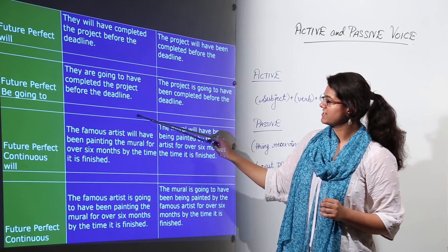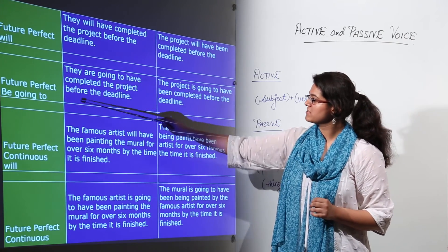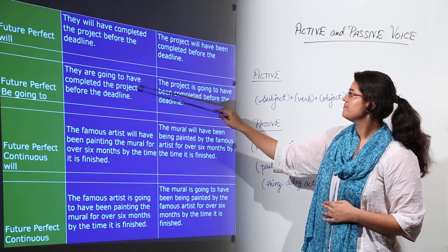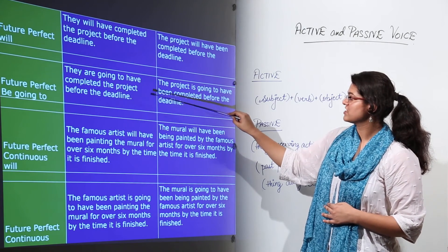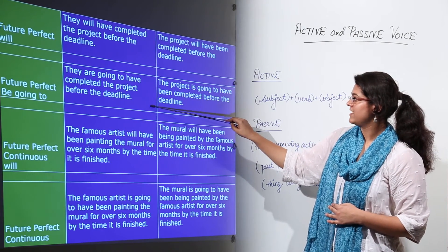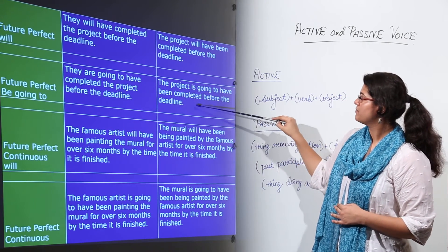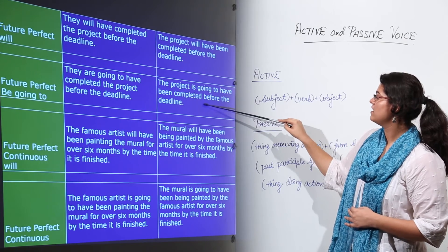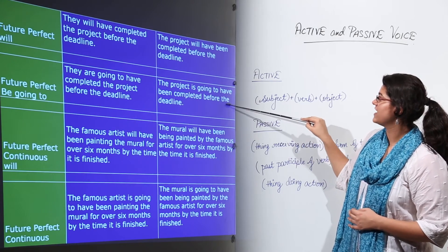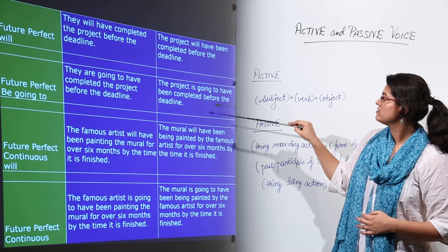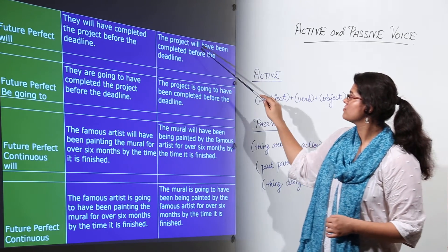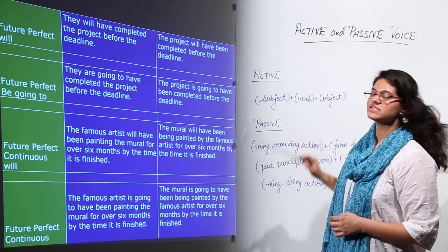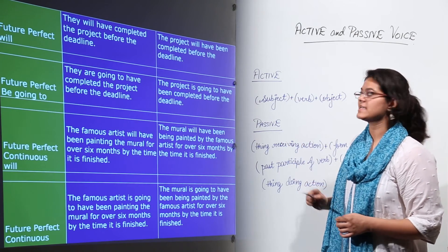Future perfect using 'be going to': 'They are going to have completed the project before the deadline' becomes 'The project is going to have been completed before the deadline.' Note we simply swap 'will' for 'is going to,' but the past participle 'have been completed' remains the same in both future perfect forms.